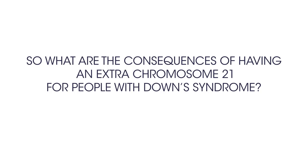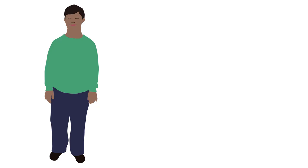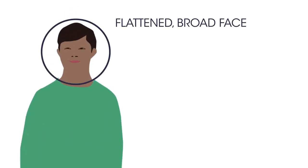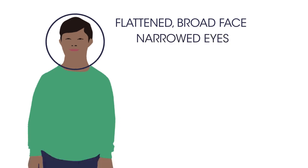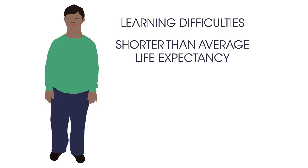So what are the consequences of having an extra chromosome? For people with Down's syndrome, the difficulties vary in severity. Facial characteristics can include a flattened, broadened face and narrowed eyes, but people with Down's syndrome don't all look the same — they also look like their parents and family. They may have a lower than average IQ and a shorter than average life expectancy.